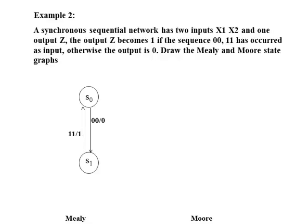Now we check the possible inputs at each state. Here the possible inputs are 0,0 and 0,1 and 1,0 and 1,1.